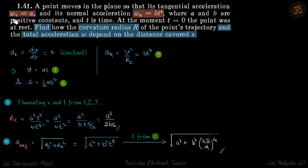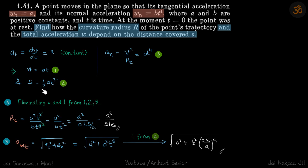We start with tangential acceleration aₜ, which we write as dv/dt, and it is given as constant a. We write it in the form dv/dt so we can eventually get t out of the scene. So v becomes equal to at, and because the acceleration is constant we can write the equation of motion: distance s = ½at².